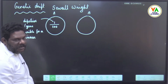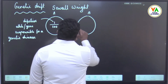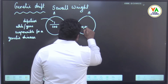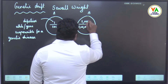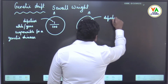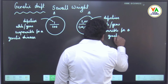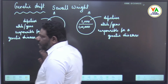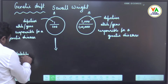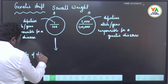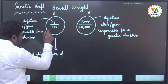Out of 100, only one is having a defective allele. Now consider a population of 1,00,000 out of which 1,000 are having the defective allele or gene responsible for a genetic disease. Under these two conditions, think about whether the probability of elimination of the defective trait is more or less.